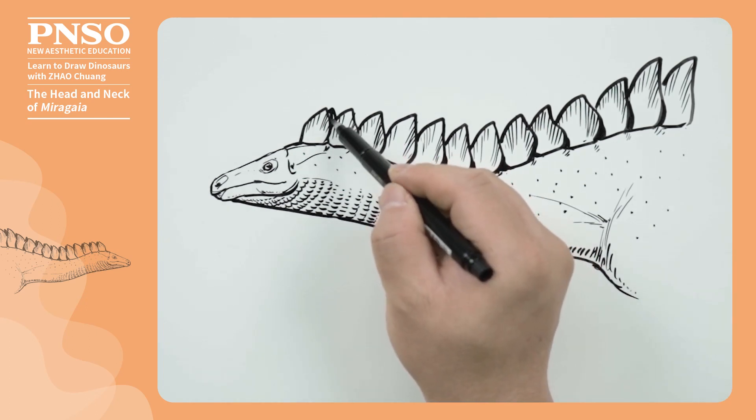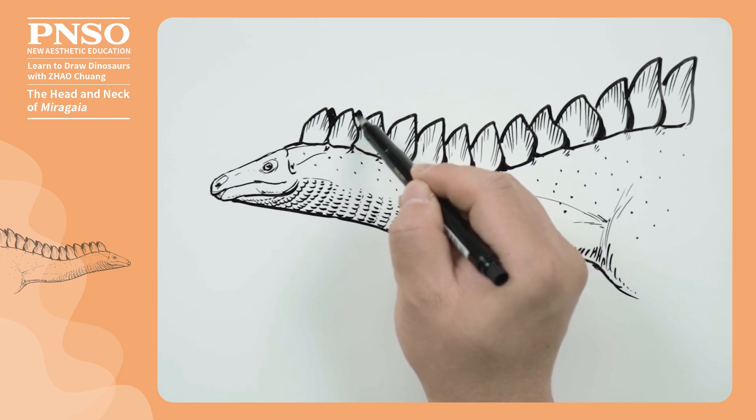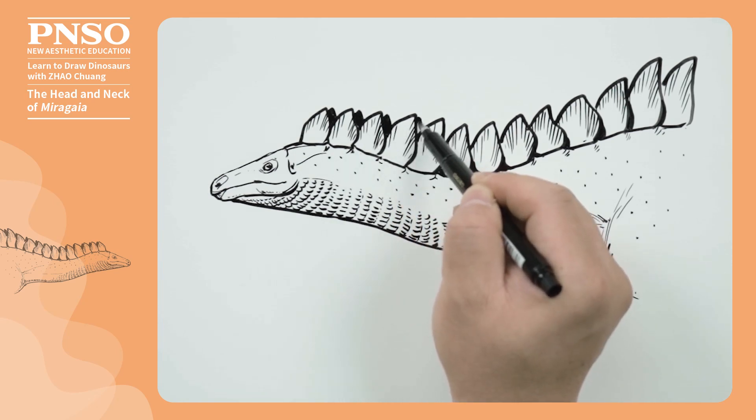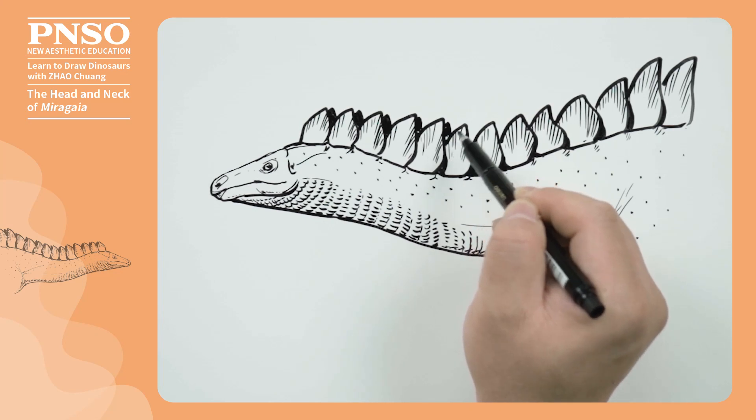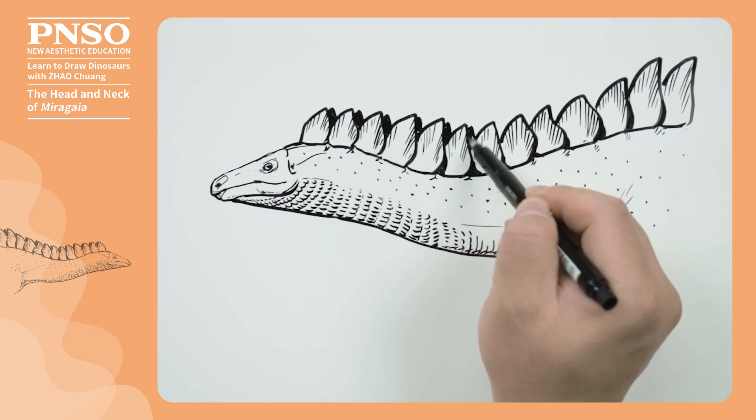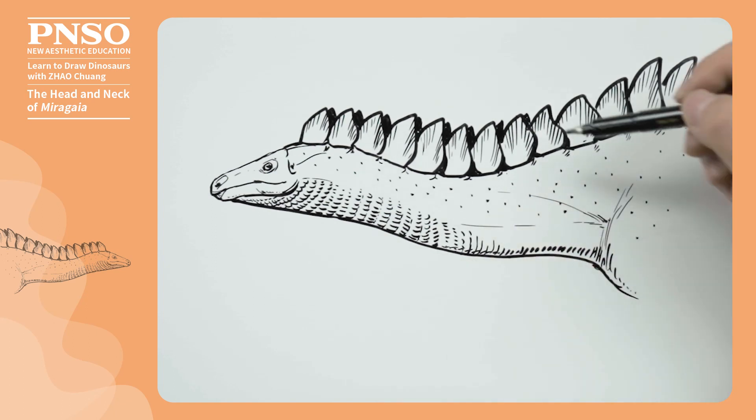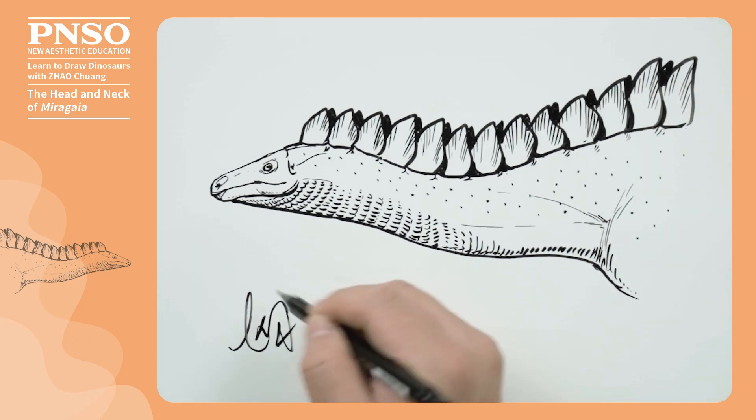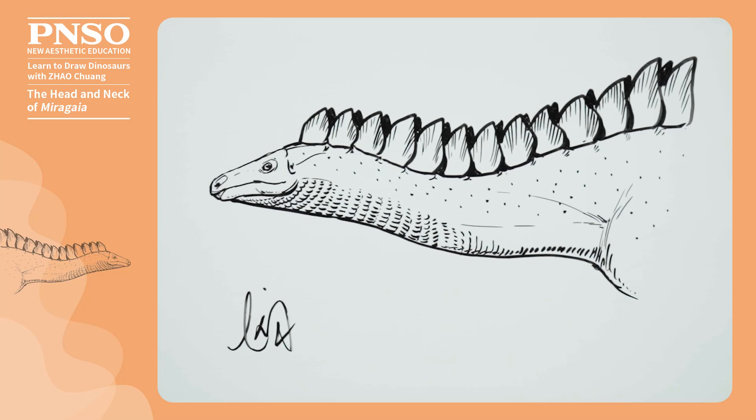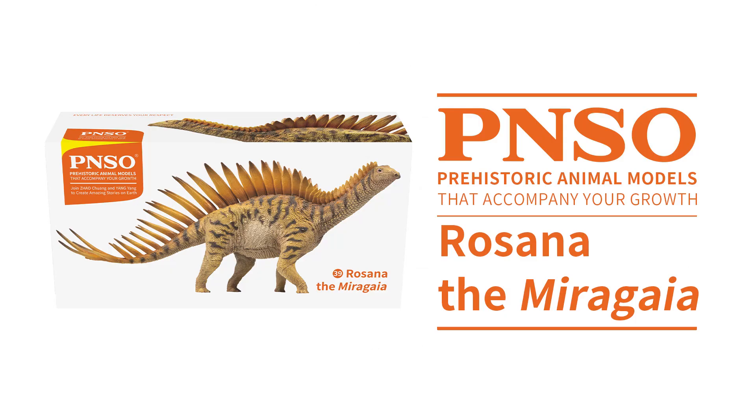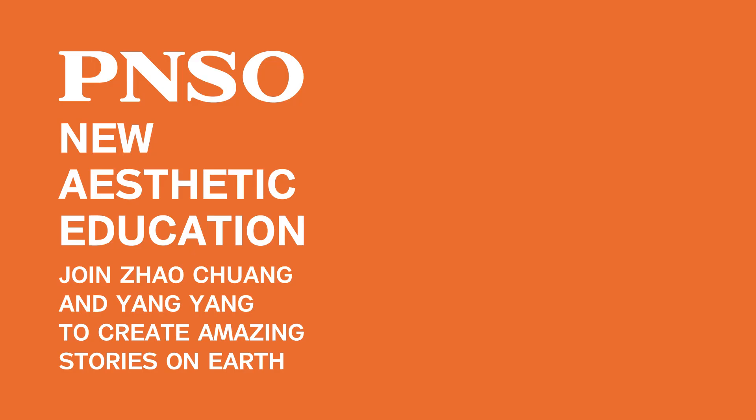Finally, we draw the other row of bony plates. We can directly show them in silhouette or shading. Good, like this, we've finished the head and neck of Miragaia. We'll see you next time again.